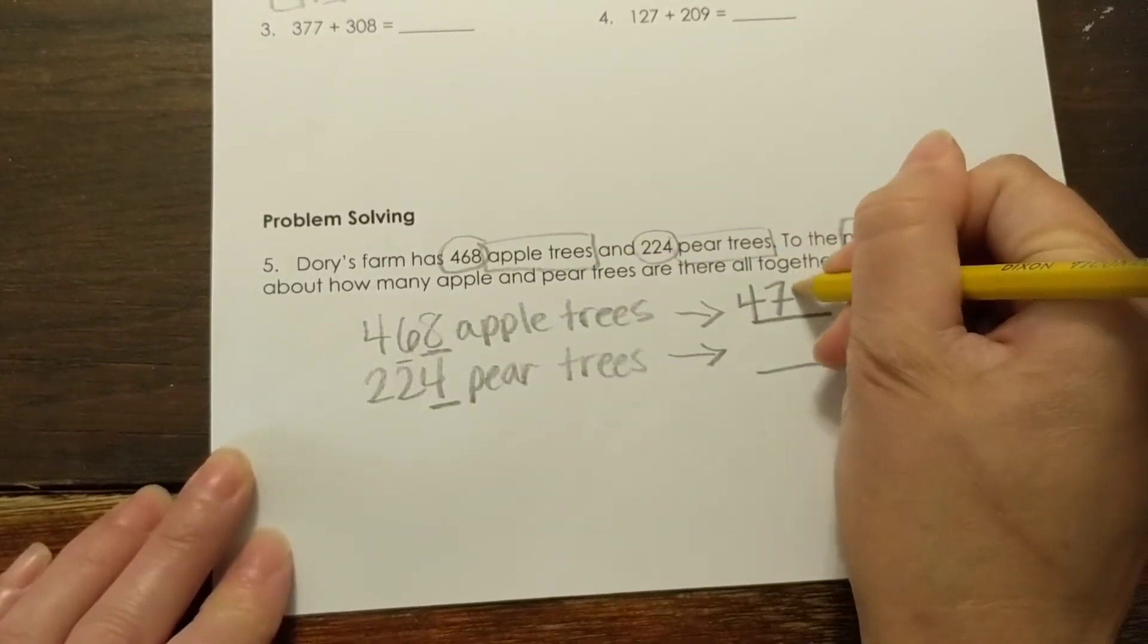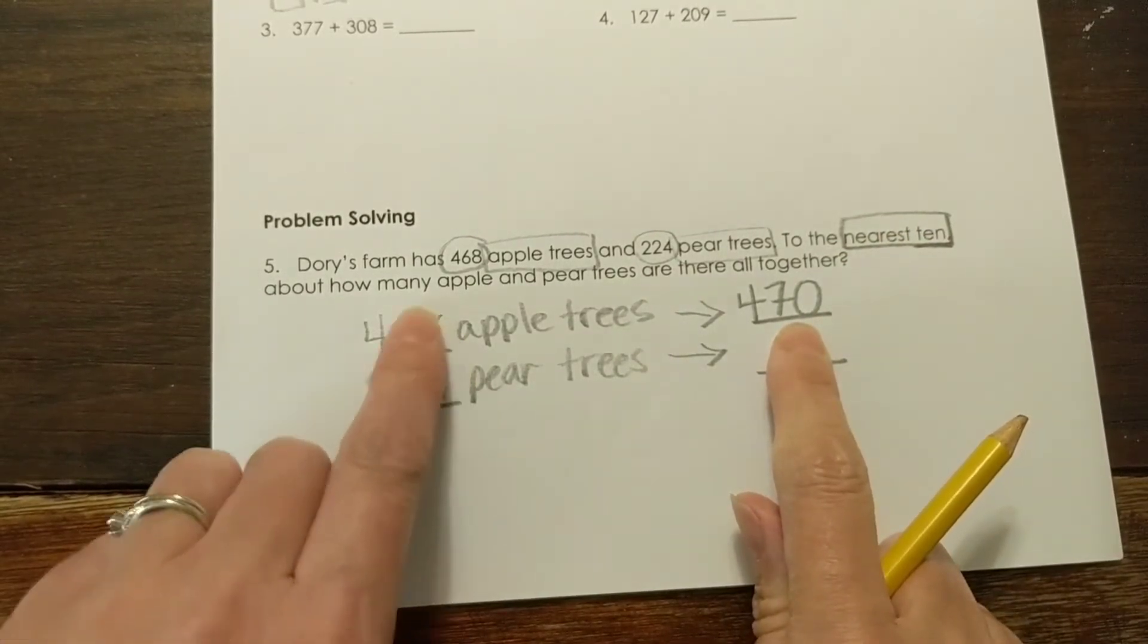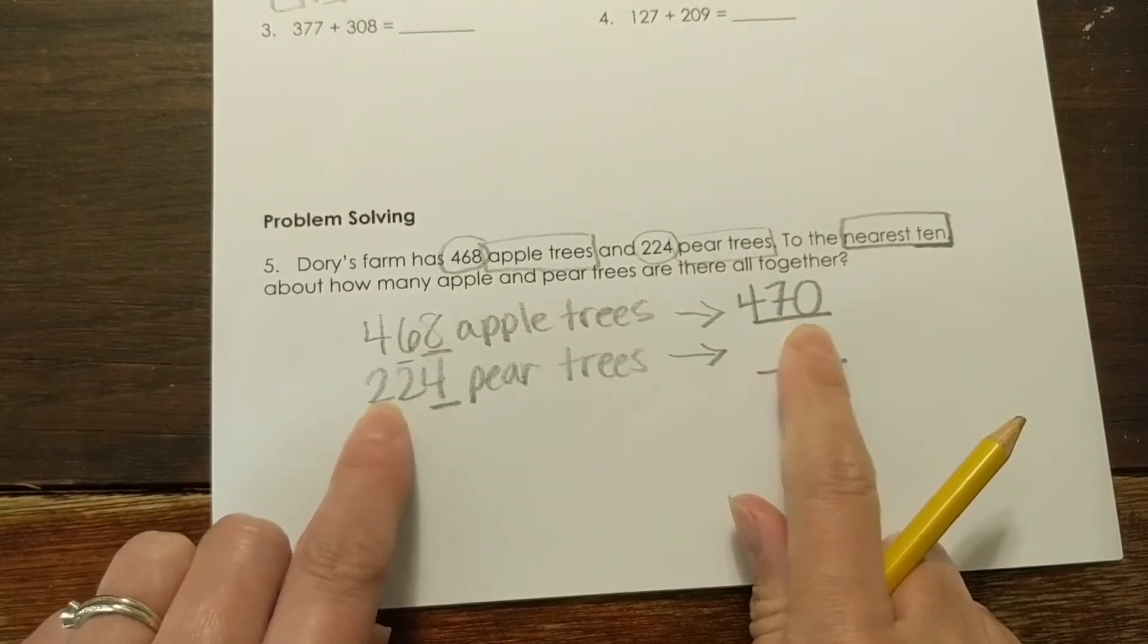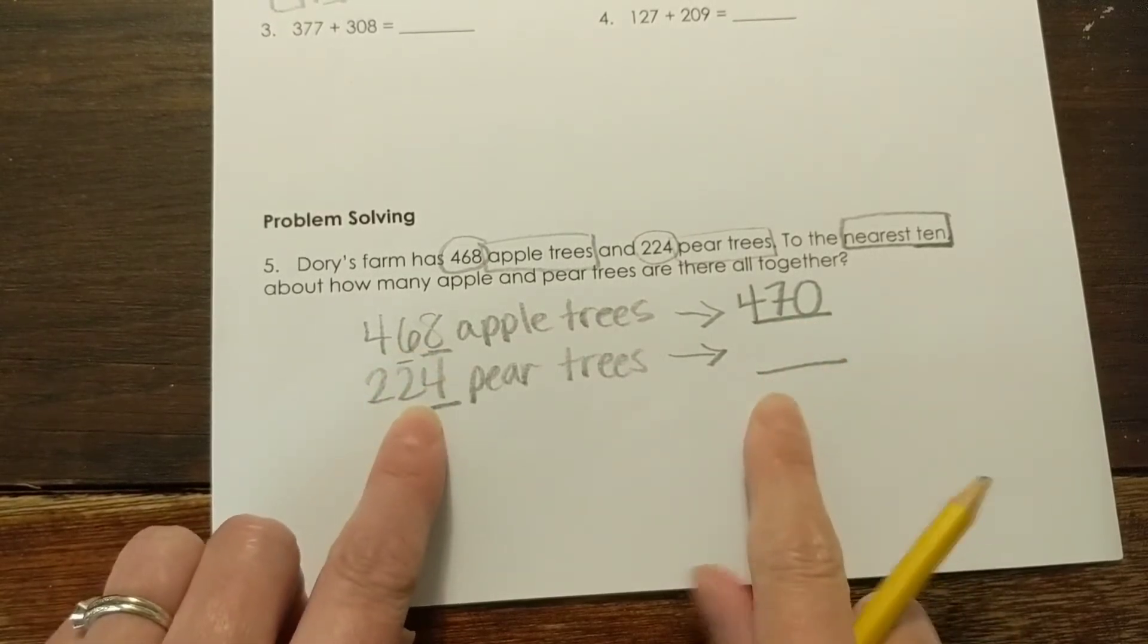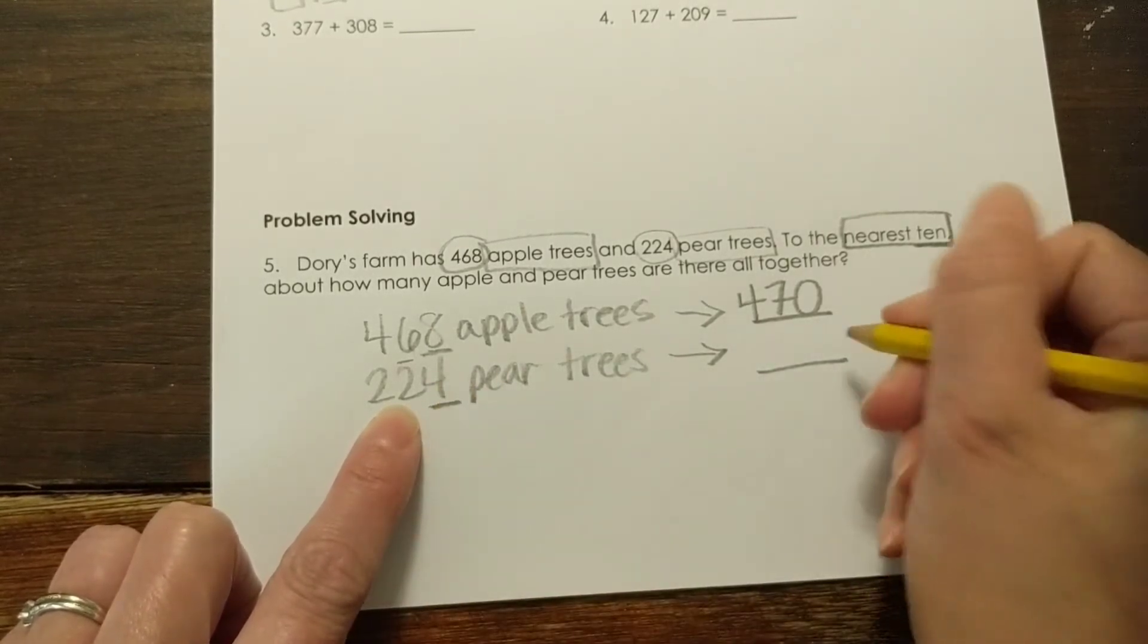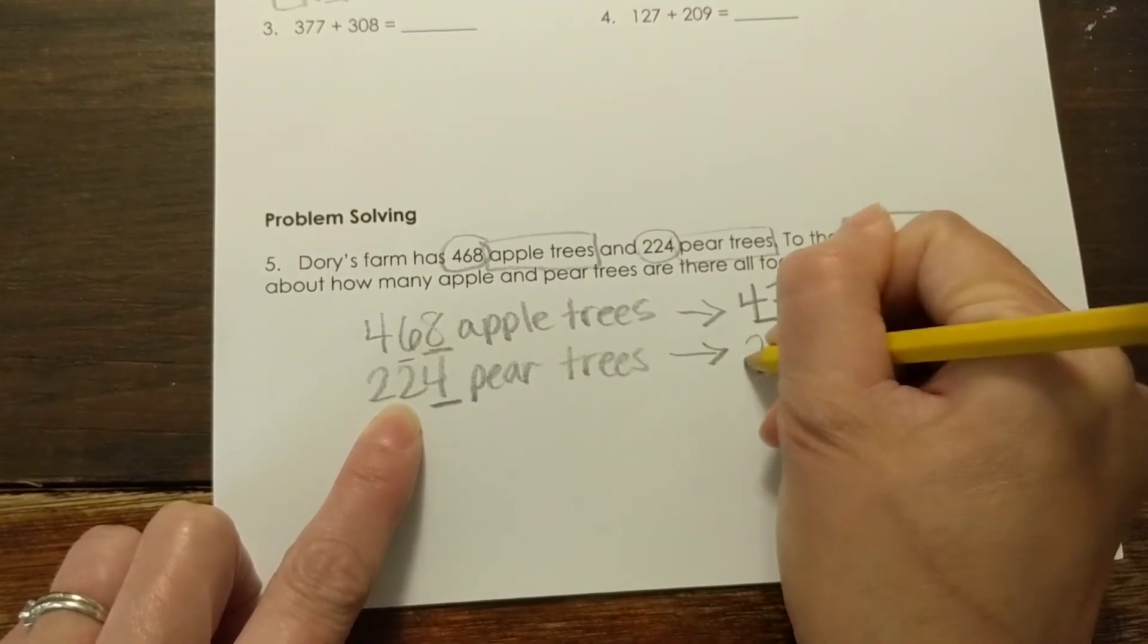And the 8 is going to become a 0. Because remember our ones place, when we're rounding by tens, always becomes 0. And then we round up that 10 or we leave it just how it is. So let's look at this one, 224. I see the 4, it's 4 or less. So we're letting it rest. So that 4 becomes a 0. And that 2 in the tens place stays the same.